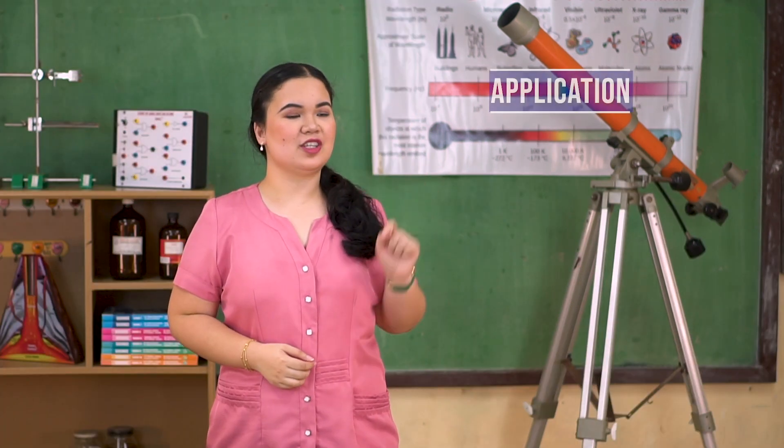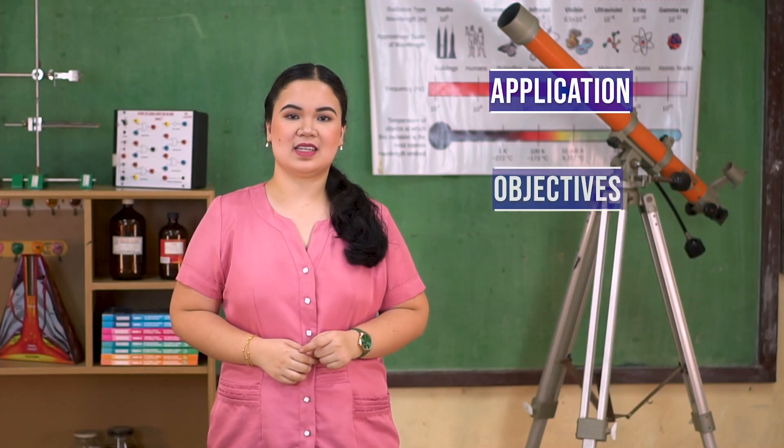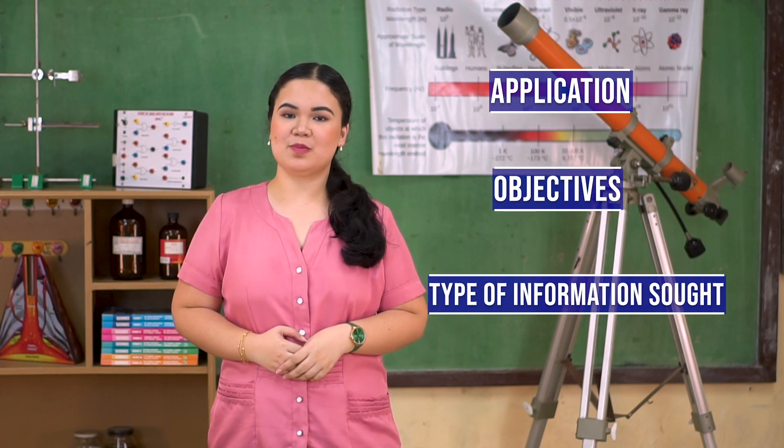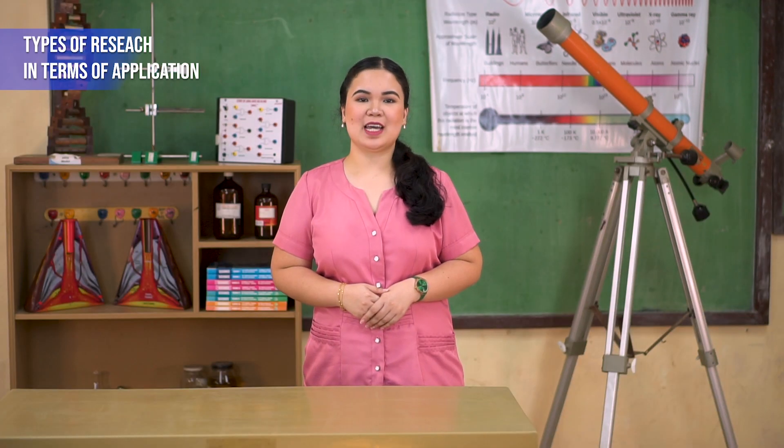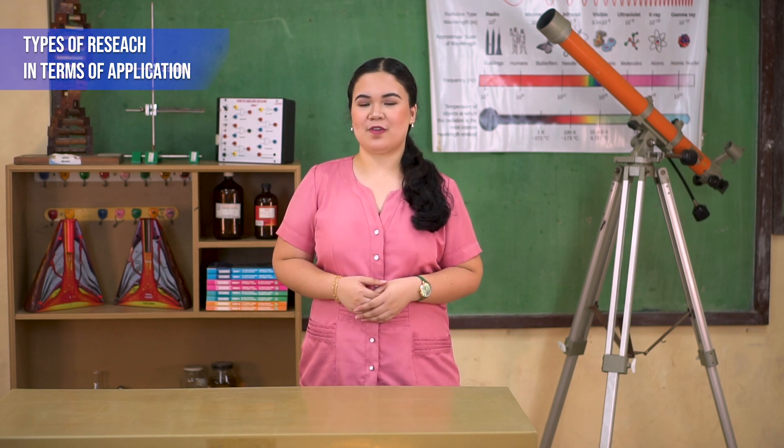The type of research is dependent on the researcher's aim in conducting the study and the extent to which the findings will be used. The types of research may be divided into three viewpoints: application, objectives, and type of information sought. Let us first have the types of research in terms of application.